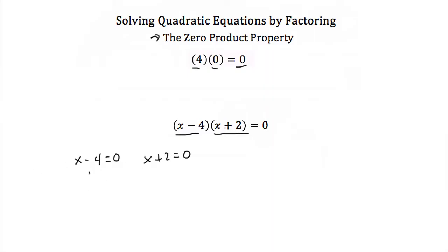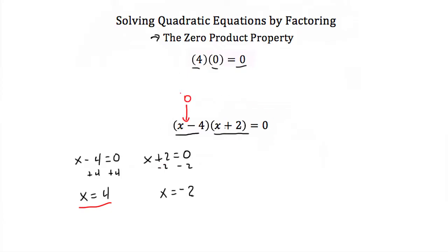Now if we do that and solve for x, we would add 4 to both sides on this equation, end up with x is equal to 4, and we would subtract 2 from both sides on this equation, and end up with x is equal to negative 2. Now we've just solved for x values that will make this entire expression equal to zero. If I plug in x is equal to 4 into this equation, this binomial will equal zero. This one will equal 6, and I'm multiplying zero times 6. Well that's still equal to zero.